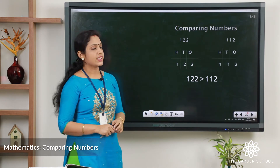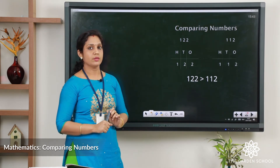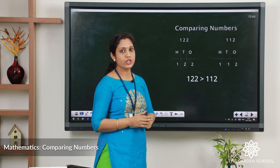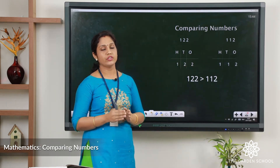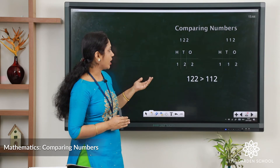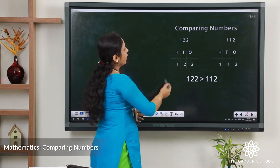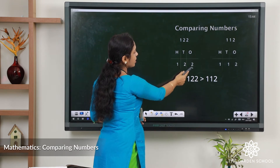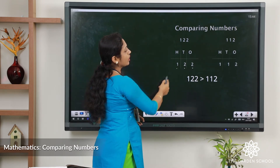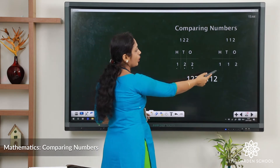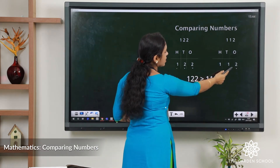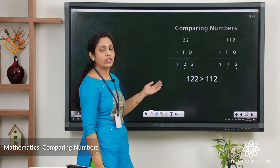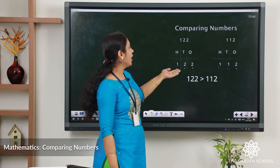Now let's compare 3-digit numbers. Here we have 122 and 112 — both are 3-digit numbers. Let's check the place value. In 122 we have 2 ones, 2 tens and 1 hundred. In 112 we have 2 ones, 1 ten and 1 hundred. Let's start by checking the hundreds.